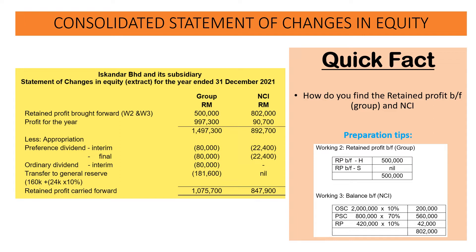For the ordinary share capital: 2,000,000 multiplied by 10% gives 200,000. For preference share capital: 800,000 multiplied by 70% (the NCI for preference share) gives 560,000. For the retained profit: 420,000 times 10% gives 42,000. These figures refer to the subsidiary. Totalling up, we get 802,000. These two figures from working two and working three are transferred to the statement of changes in equity.